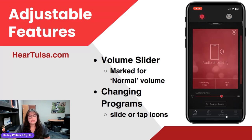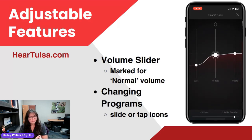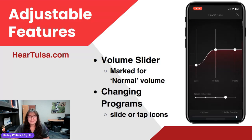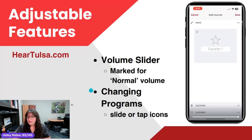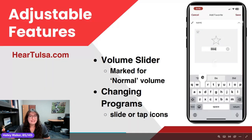I changed programs — I went over into hear in noise by sliding on the page. We can also tap the icons on the top to change programs. Now in hear in noise, I'm going to make a custom program. I'm going in and changing my settings exactly how I want, and then I'm going to label this new program 'dinner group.' I've set it up using the hearing in noise program to give me that benefit from that program.